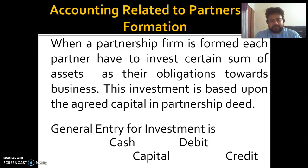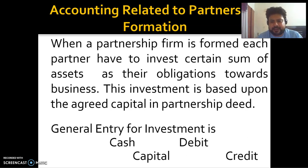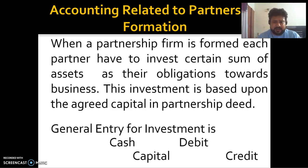The general journal entry for investment is: debit cash and assets, credit capital. If there is only cash, it is a simple entry. If there are other assets such as furniture, it becomes a compound entry — cash and asset are debited, and the total capital amount is credited. Cash and assets increase, so they are recorded on the debit side. Capital or owner's equity increases, so it is recorded on the credit side.